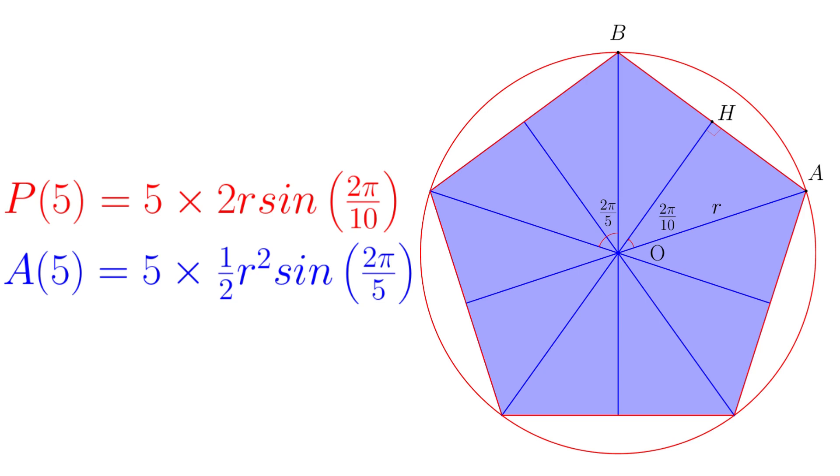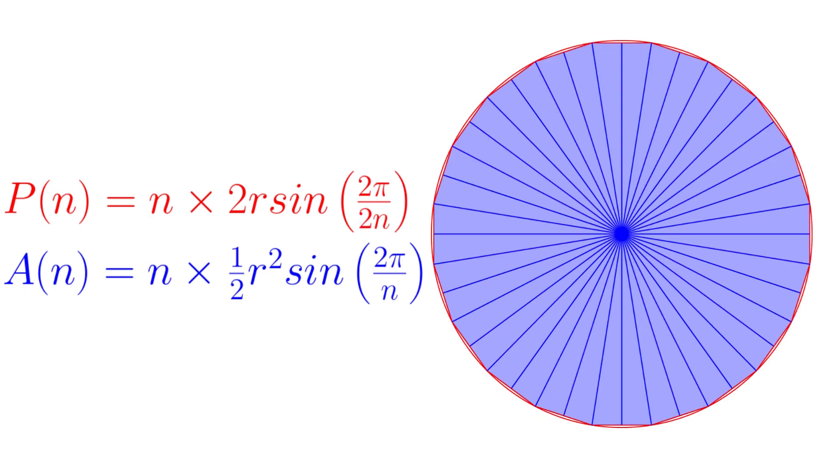Have you now seen the common point in these formulae? It lies in the number of edges of regular polygon. It means, if a regular polygon inscribed in the given circle has n edges, its perimeter P(n) and area A(n) are calculated as in the formulae.